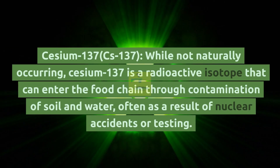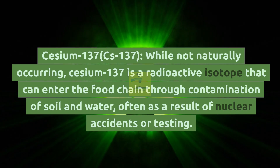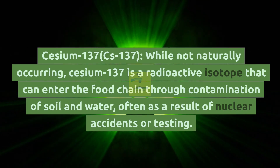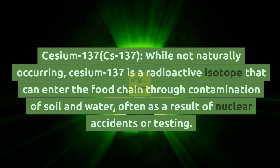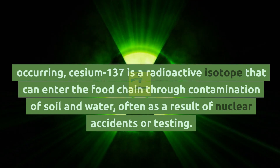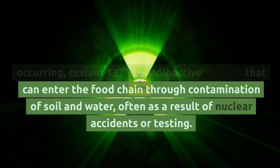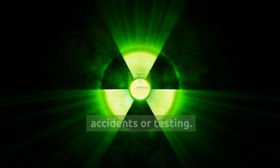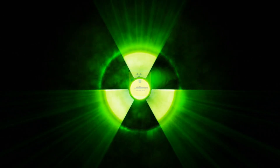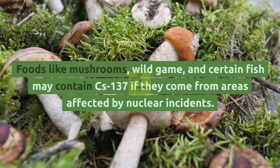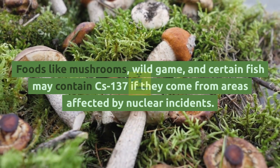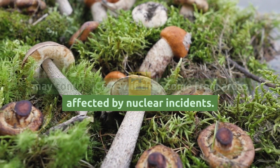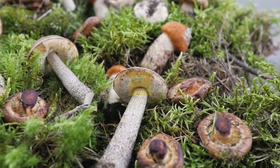Cesium-137 (Cs-137): while not naturally occurring, cesium-137 is a radioactive isotope that can enter the food chain through contamination of soil and water, often as a result of nuclear accidents or testing. Foods like mushrooms, wild game, and certain fish may contain Cs-137 if they come from areas affected by nuclear incidents.